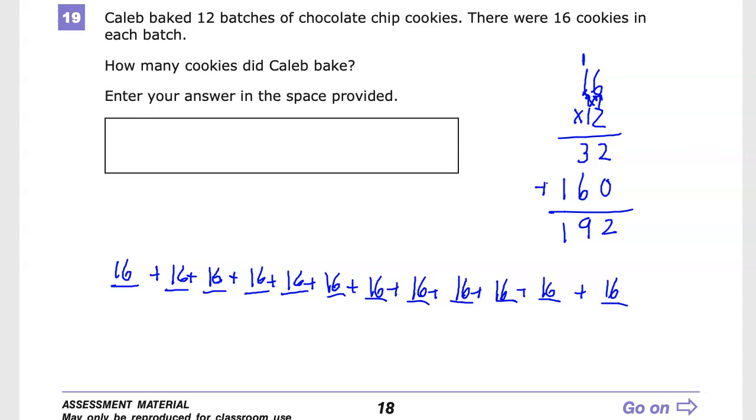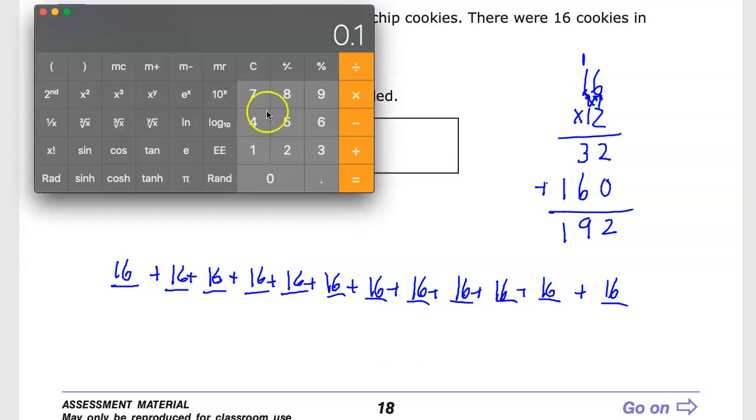Another thing I can do is just use the calculator. 16 times 12 gives me 192, just what I suggested that it was before.